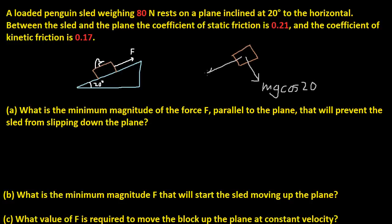And we have another force acting along the plane — this is going to be mg sine 20. And since the applied force is going up the plane, we have our frictional force going this way. So this is friction.